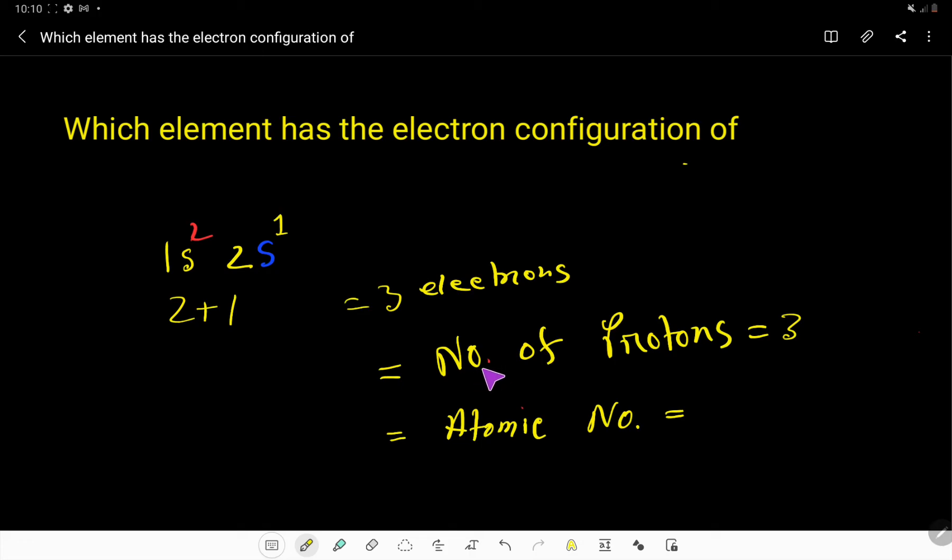Here the number of protons is three, so atomic number will be three. Now we have to find out the element whose atomic number is three from the periodic table.